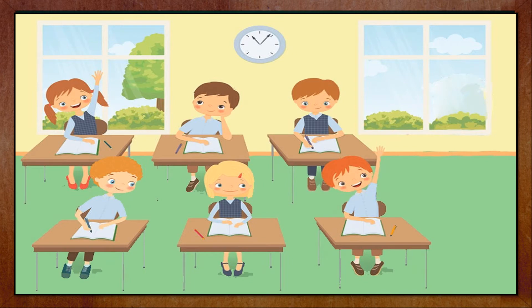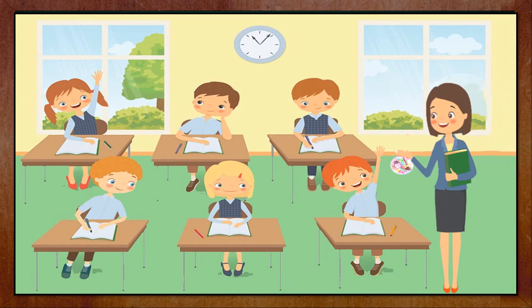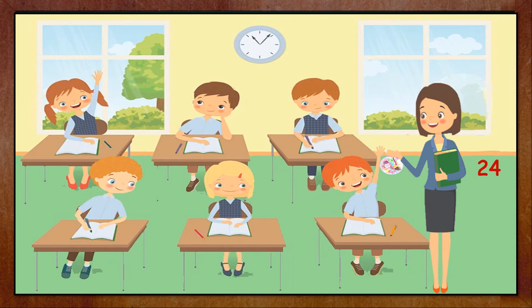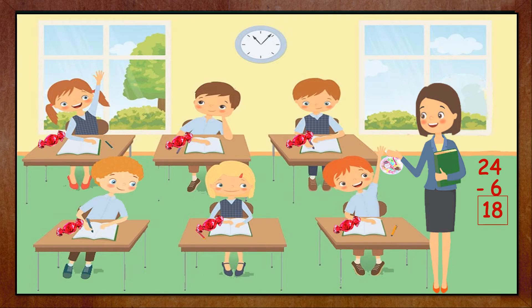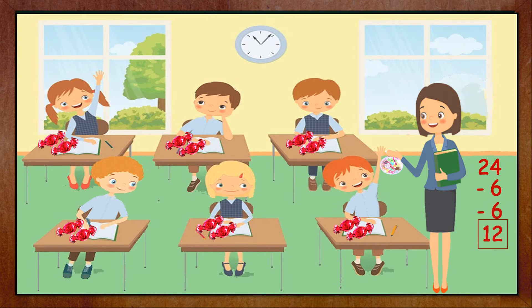To understand what is division, look at this example. One day the class teacher walks into the class with a box of 24 candies, which she wants to distribute equally among the six children present in the class. She first takes out six candies from the box and gives one each to the children. Now she is left with 24 minus 6, which is 18 candies. She takes out six more and distributes one each, after which she is left with 18 minus 6, which is 12 candies.